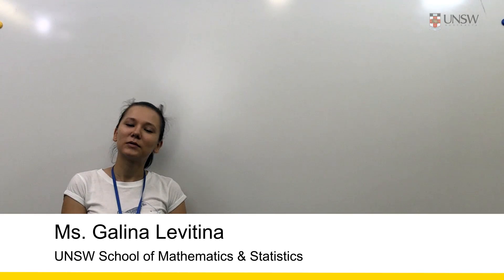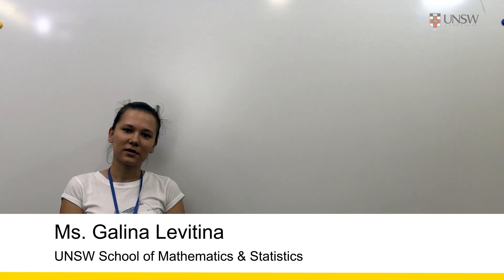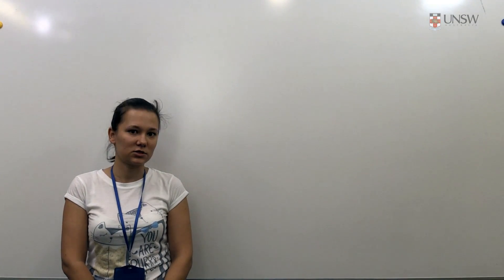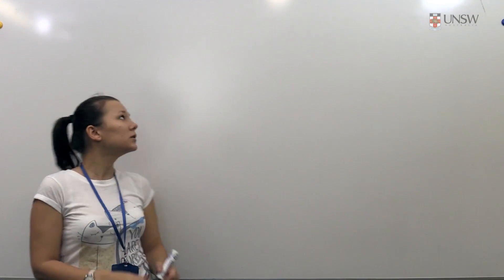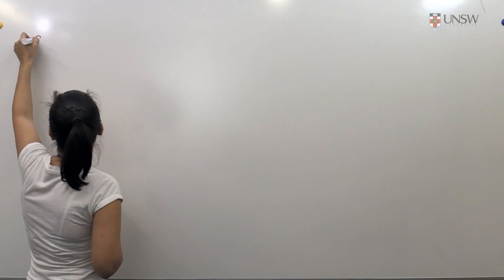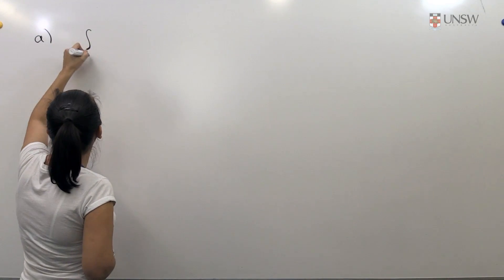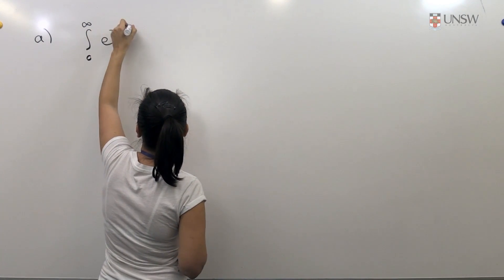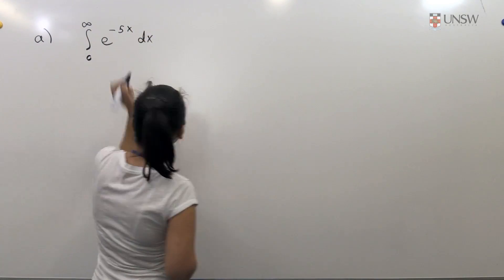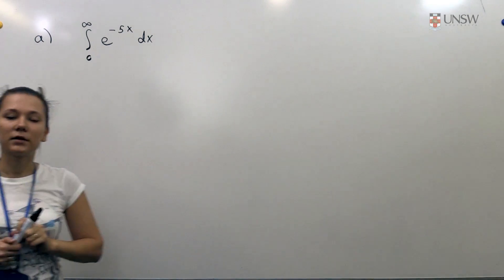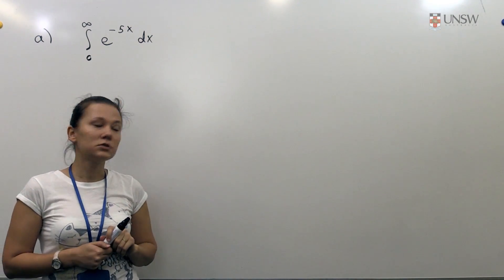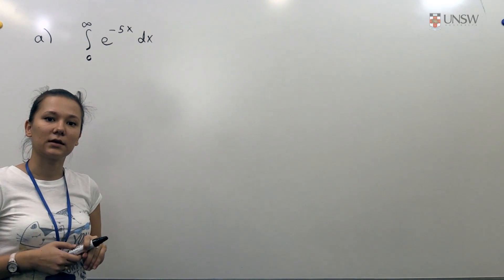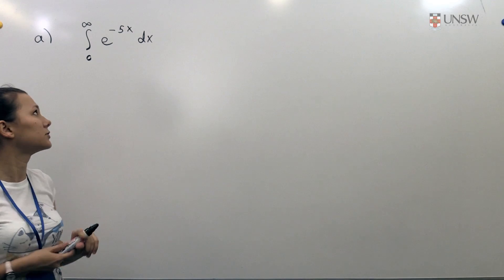Hello! In this video we will be looking at improper integrals and how to find whether they converge or diverge using the definition of improper integrals. In the first part we have the integral from 0 to infinity of e to the power of minus 5x dx, and we will find whether it converges or diverges using the definition, and then if it converges we will find the actual value.